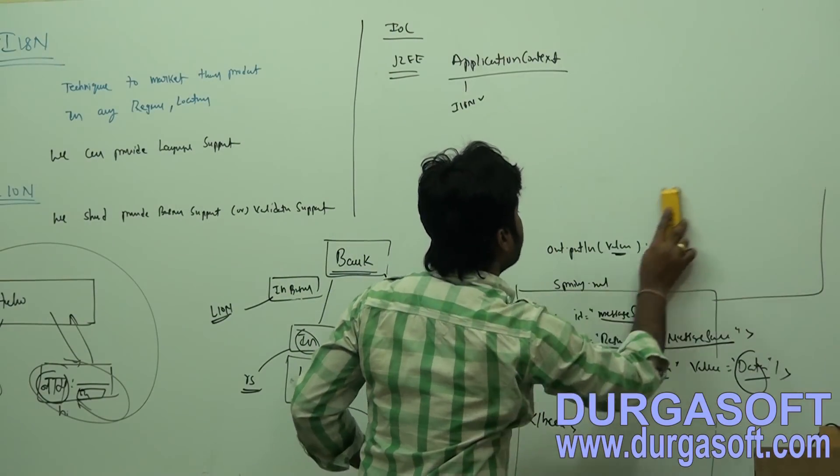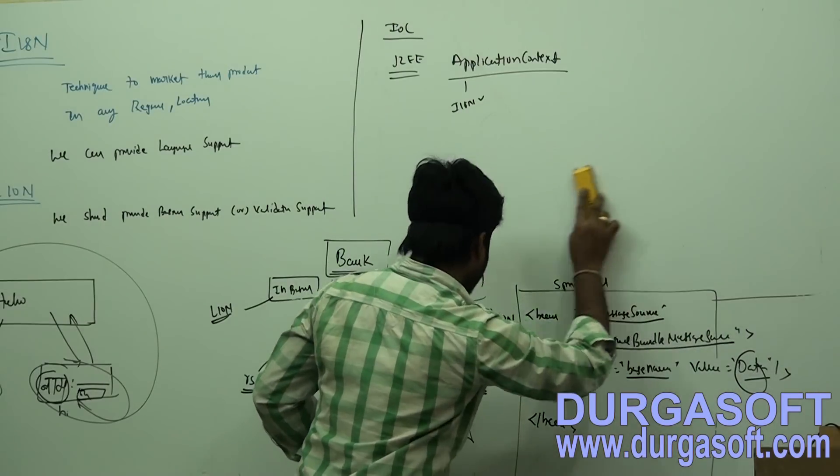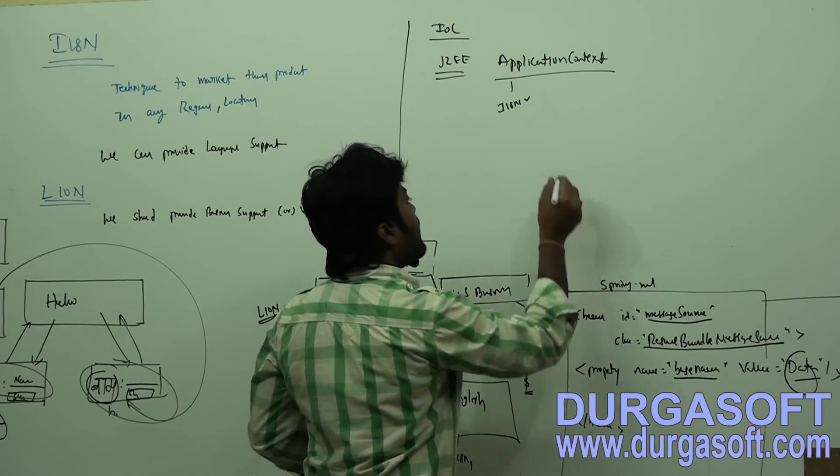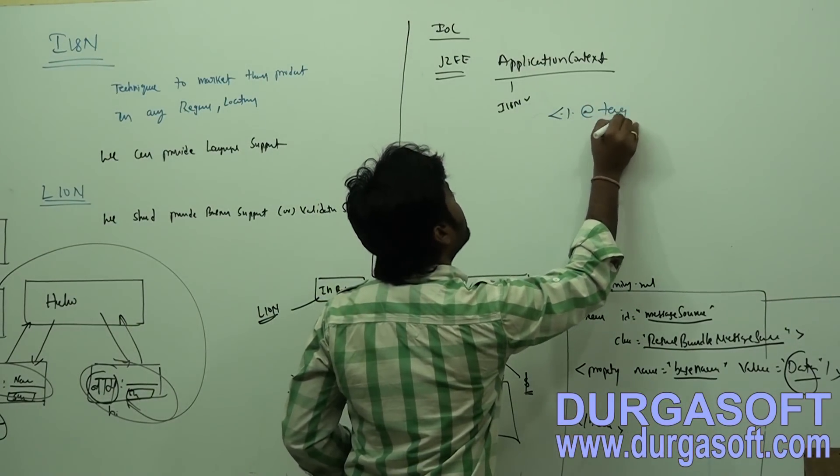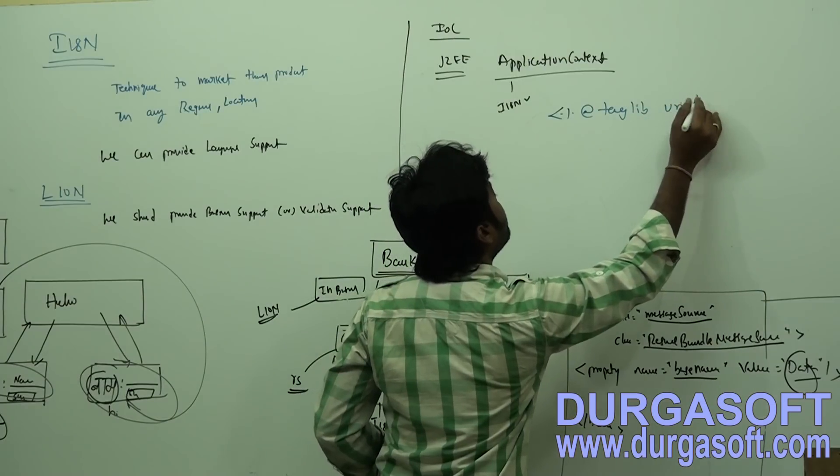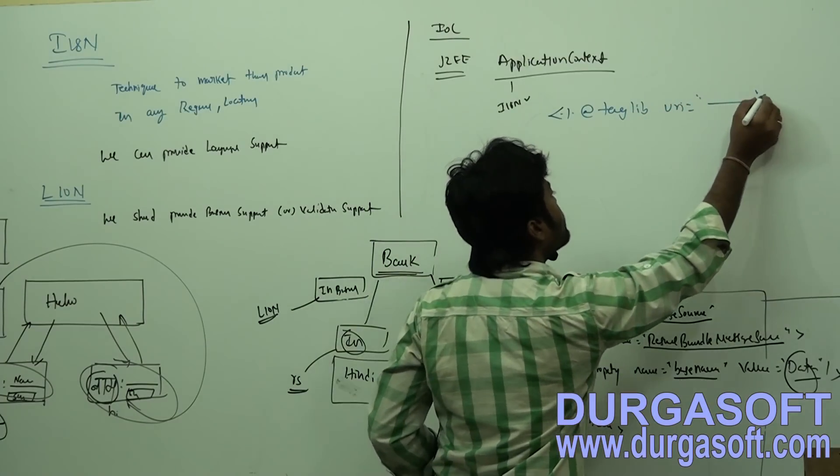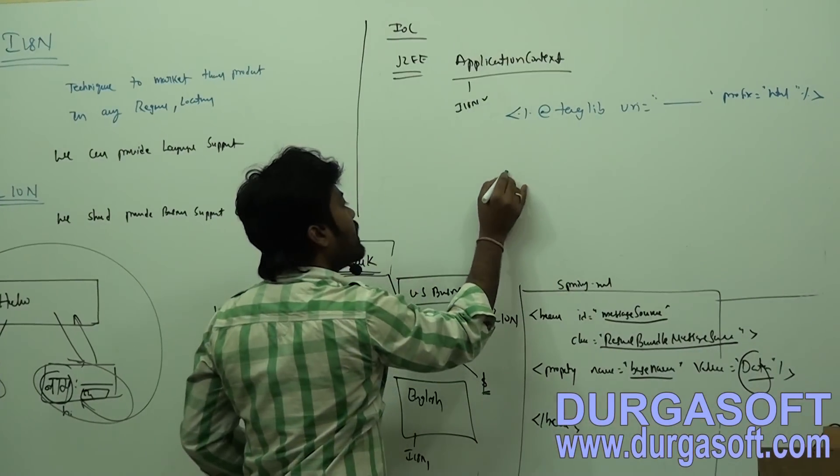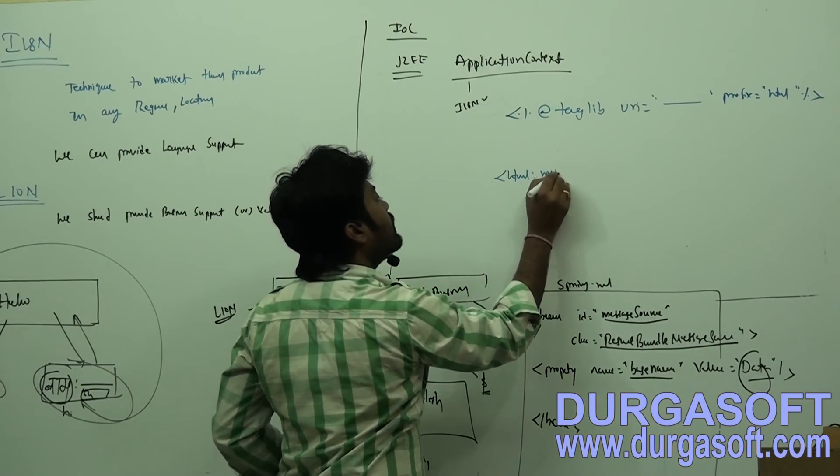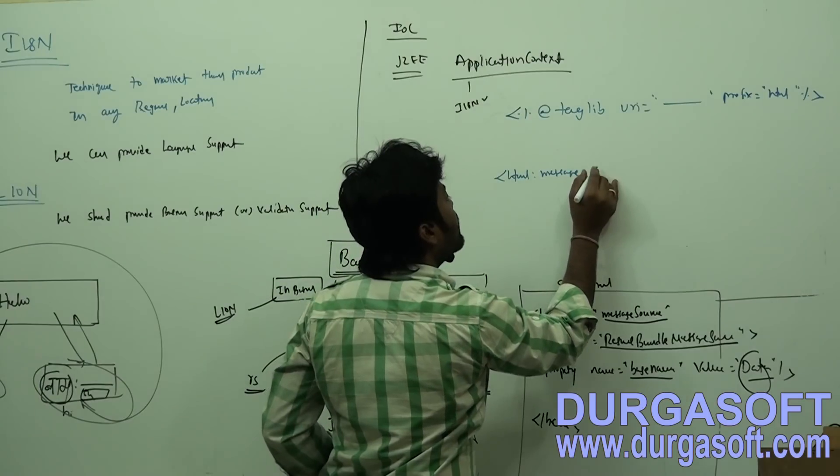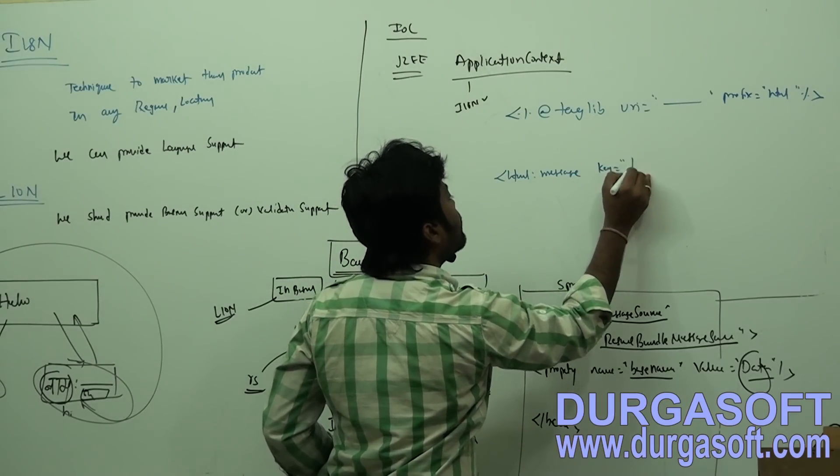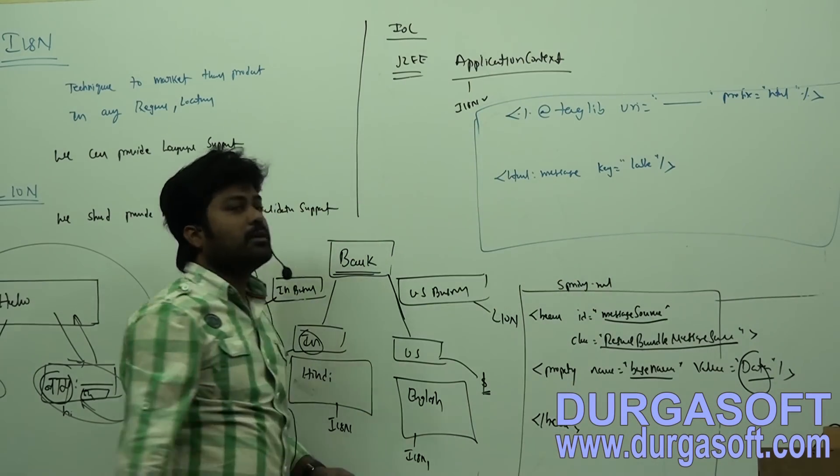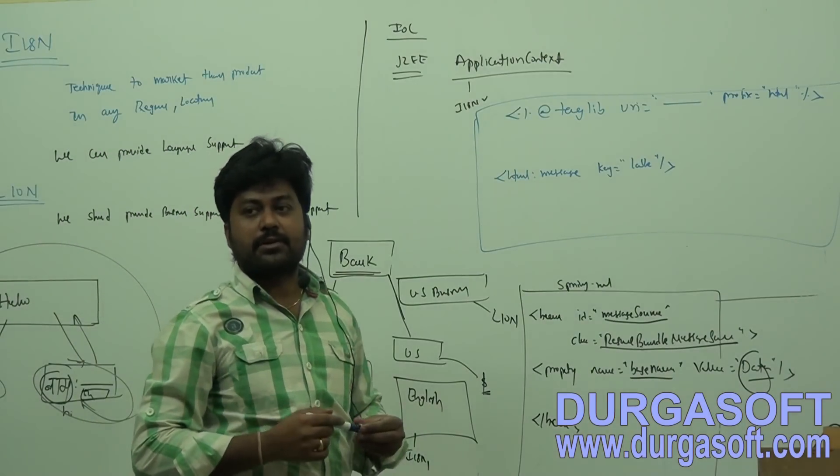So in that MVC, what we should do, we no need to read this language or you no need to create locale and all these. So just what we have to do, they are given one simple tags, Spring tag library we need to import, at the red taglib, URI, we have to import tag library, form tag library, actually it is form tag library, and prefix with HTML. And then, by using that HTML colon message, message, and they are given one key attribute here. In that key, if you pass your label, dynamically it will populate the title result. But it is possible in case of MVC application.